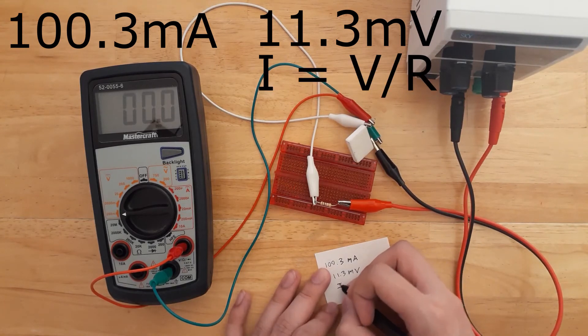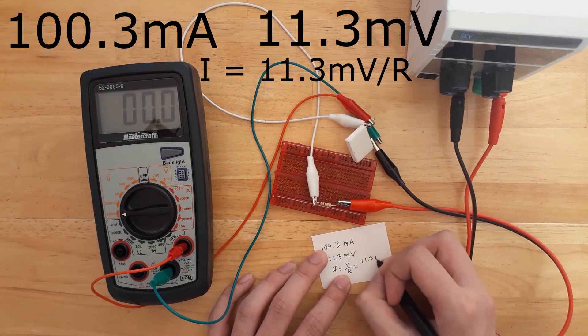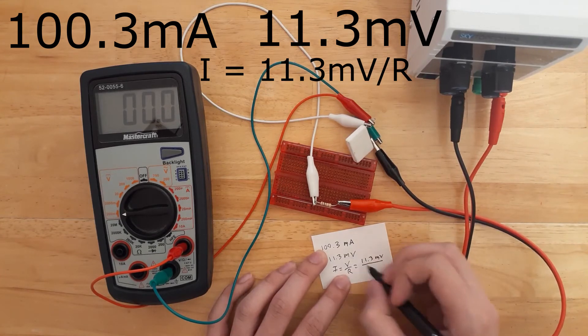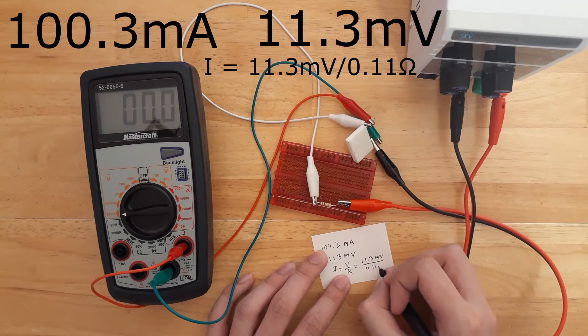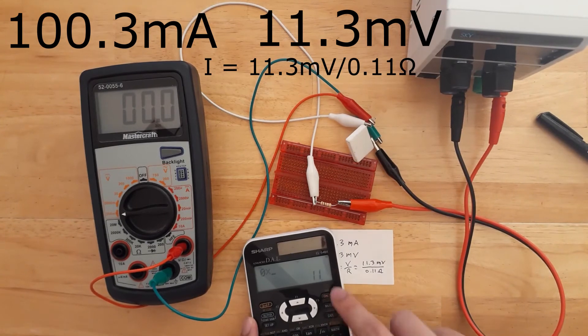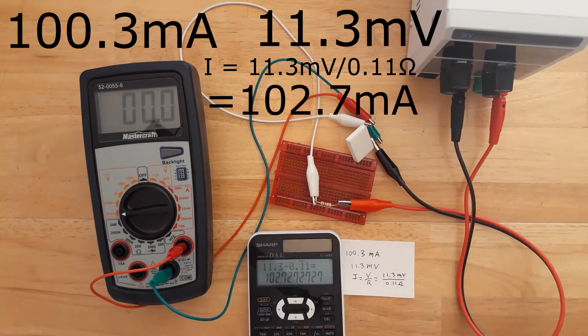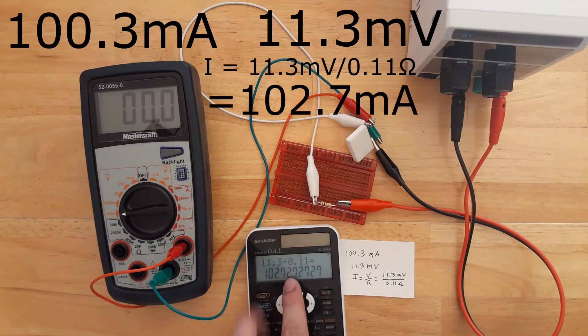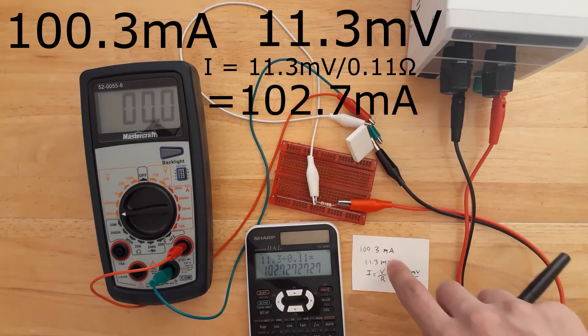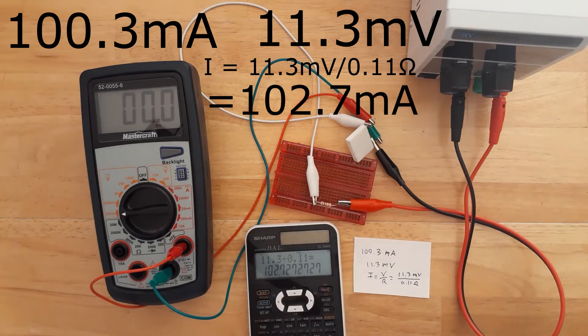I equals V over R. V equals 11.3 millivolts. R equals the 0.11 ohms. And I need a calculator for that. 11.3 divided by 0.11 ohms, and you will see we got 102.7 milliamps. Now this is pretty similar to our 100.3 milliamps. It's a little different just because I think the multimeters are slightly off with voltage, but it's close enough.